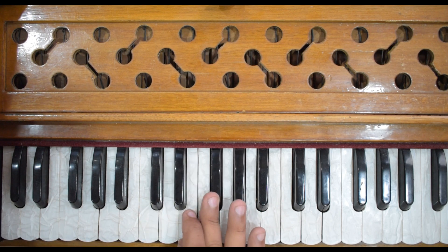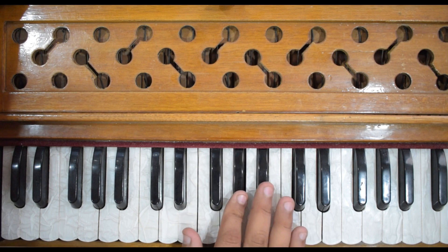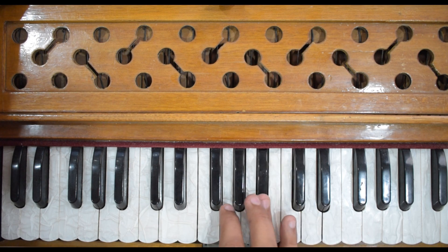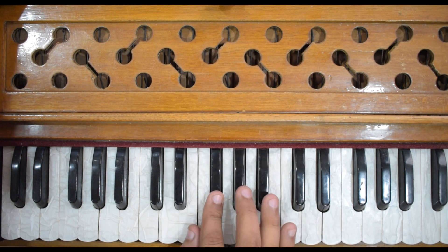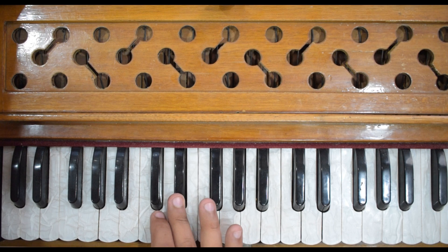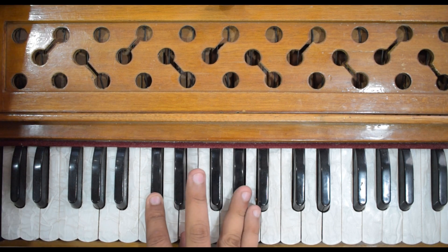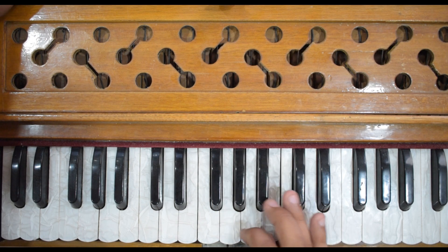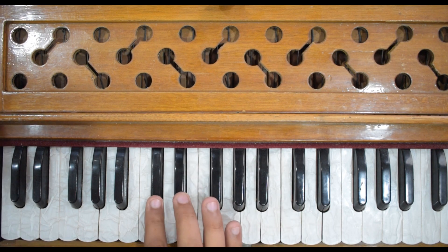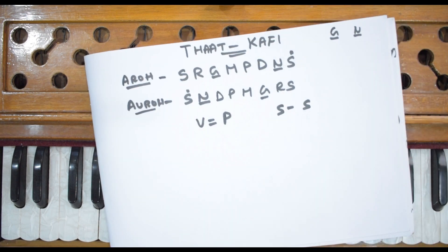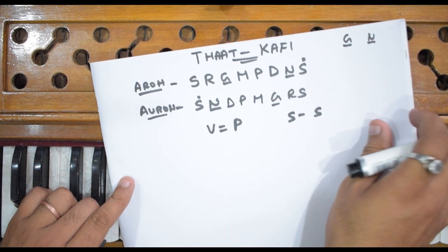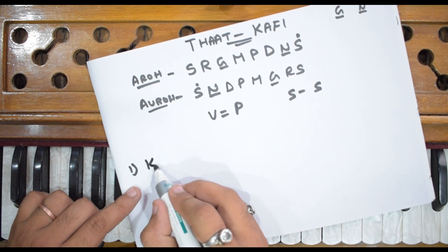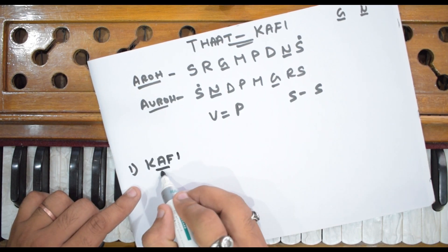Sa Ga Ma Pa Ni Dha Ni Sa — Sa Ni Dha Pa Ma Ga Re Sa. This is your Thaat Kafi. Now we will look at the main raags that come from it.